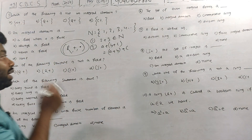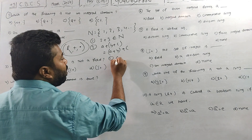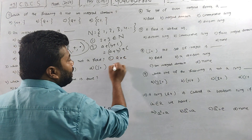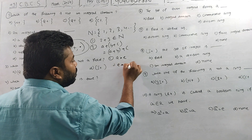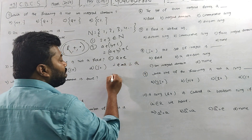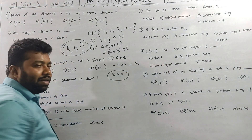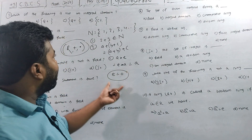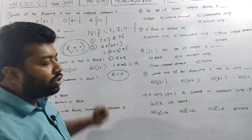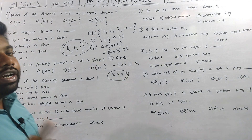Next, the identity property. The identity property: a star e is equal to e star a is equal to a. For addition, the identity element is zero. But zero is not in the set of natural numbers N+, so the identity property is false.